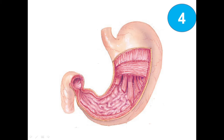We can see here the stomach, frontal view. Let's talk about what structures we can find here. This part of the stomach we call the cardiac part. This dome-shaped upper portion we call the fundus. The rest of this part we call the body of the stomach. And this part we call the pyloric part, in which we are having the pyloric antrum and pyloric canal.